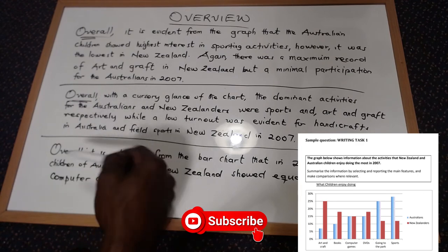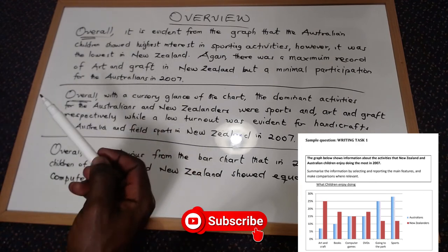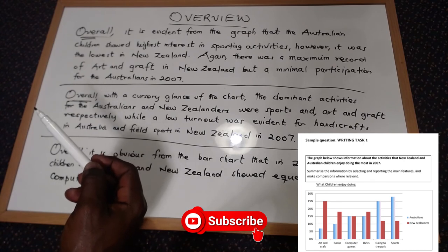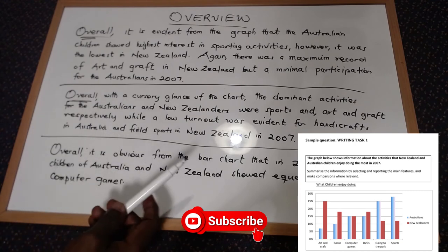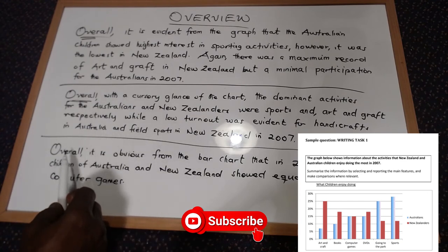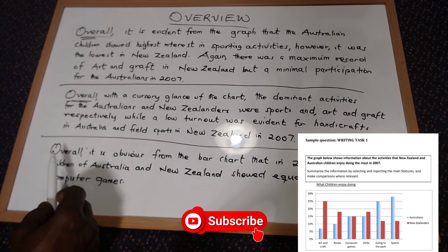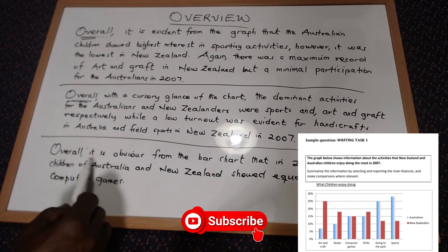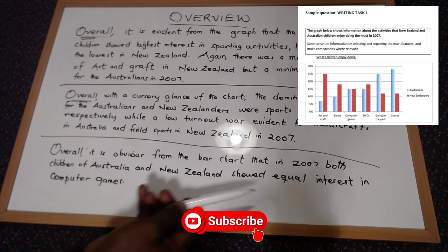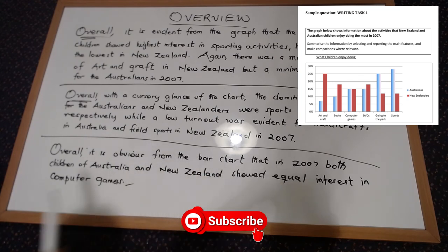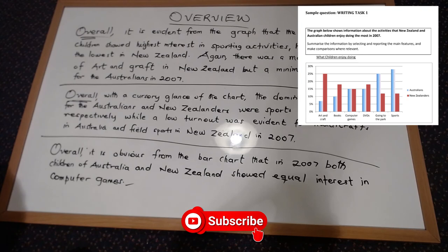There's no single way to write an overview, but whatever you write should be evident on the graph and should be a key feature that everyone can see. A third, short overview focuses on an equal value in the bar chart: 'Overall, it is obvious from the bar chart that in 2007 both children of Australia and New Zealand showed equal interest in computer games.' These are some samples of the overview regarding the diagram on screen.